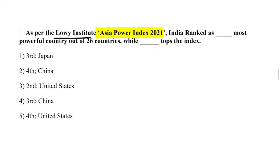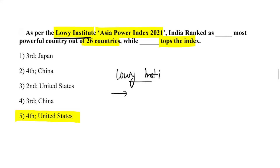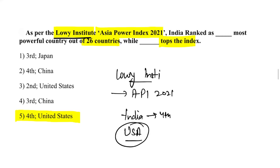As per the Lowy Institute Asia Power Index of 2021, India ranked as the fourth most powerful country in the world out of 26 countries. The United States of America topped the index.